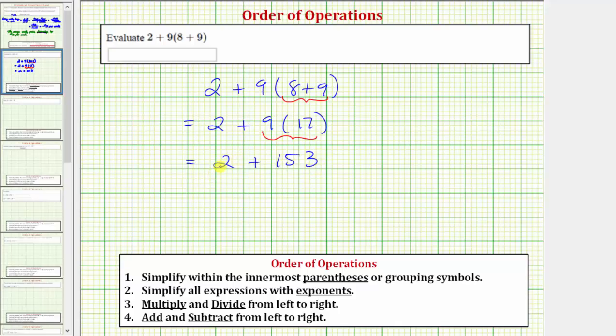And of course, our last step is to add two plus 153 equals 155. So the given expression simplifies to 155.